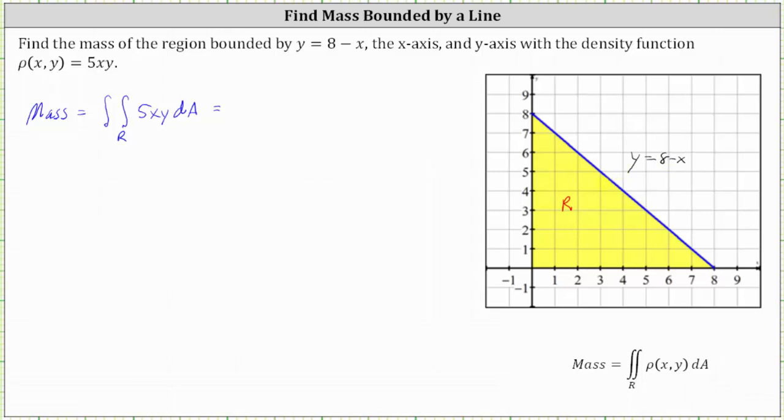Therefore we'll let dA be equal to dy dx, which gives us a double integral of 5xy dy dx. Now let's find the limits of integration for y. The region is bounded below by y equals 0 and above by y equals 8 minus x, which means the limits of integration for y are from 0 to 8 minus x. The limits of integration for x are from 0 to 8.